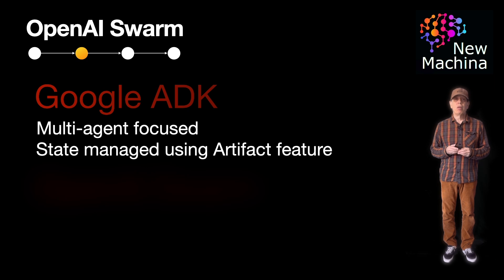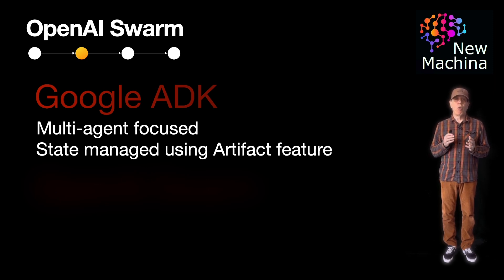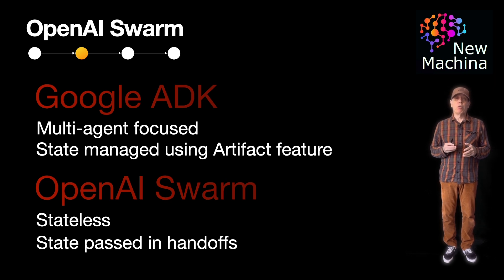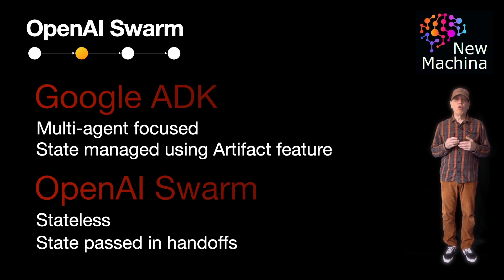So how does Swarm compare to Google ADK? Well, in this case, both of these frameworks are oriented toward building multi-agent systems. One big difference is Swarm does not provide built-in memory — remember, Swarm is stateless by design. Alternatively, Google ADK does have built-in support for stateful memory per agent.